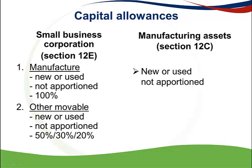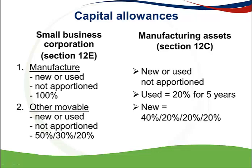The percentage applicable to the Section 12C allowance depends on whether the asset is new or used. If it is a used (secondhand) asset, then 20% of the cost is claimed every year for 5 years, with the first 20% claimed in the year the asset is brought into use. If the manufacturing asset is new and unused, it is claimed over 4 years: 40% of the cost in the year brought into use, and 20% of the cost in each of the following 3 years.